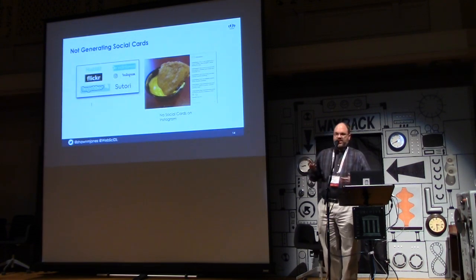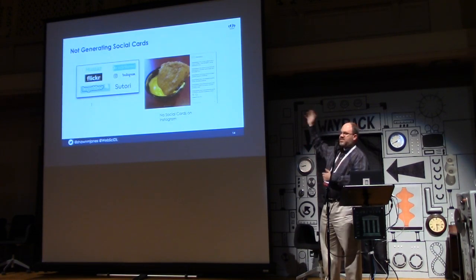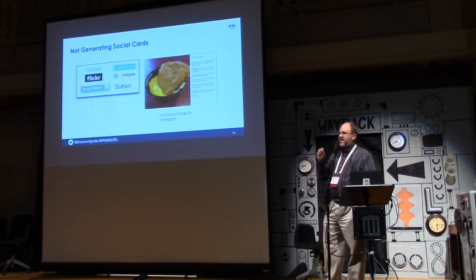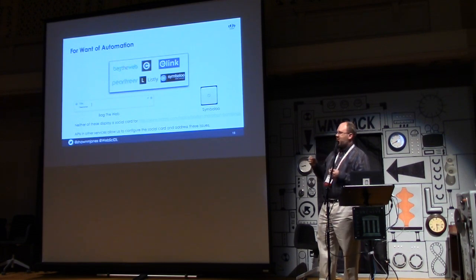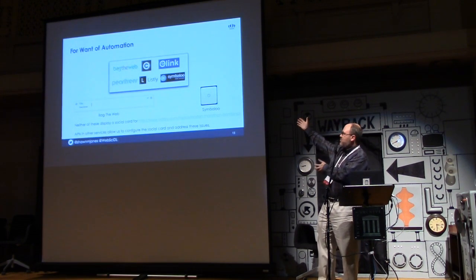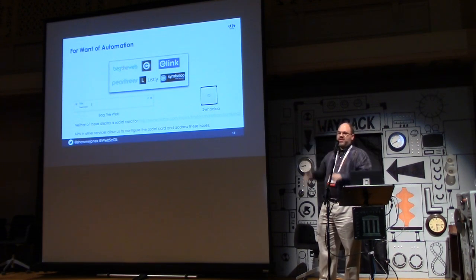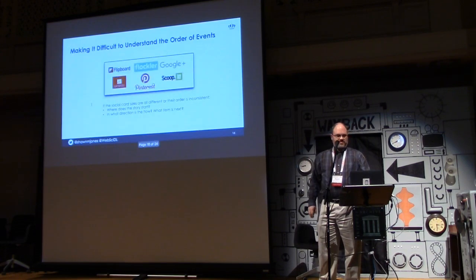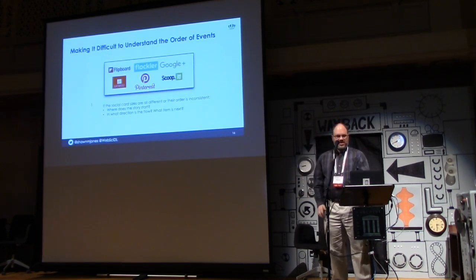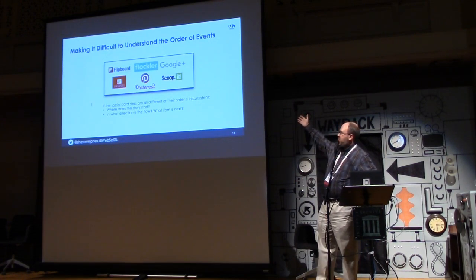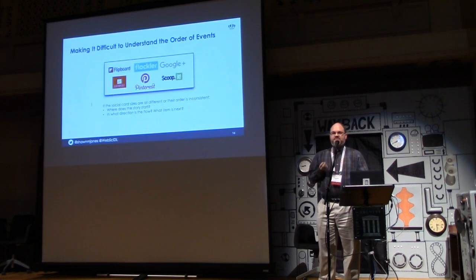Other tools don't generate social cards. I looked at Instagram, and no matter how I tried to put links in to generate a social card, it didn't do a very good job — but it did an excellent job of rendering a picture of my chicken nachos. Still other tools will generate social cards but have problems doing so consistently and require automation to help them out. Without that automation, it requires a lot of human intervention, making them unsuitable for the Dark and Stormy Archives Framework. Some tools are also great for creating curated collections but make it difficult to understand where the story starts or which direction it flows.